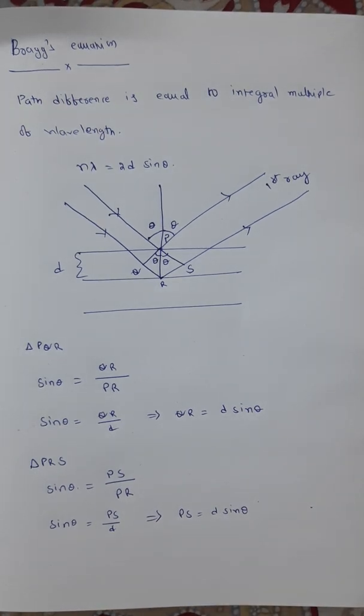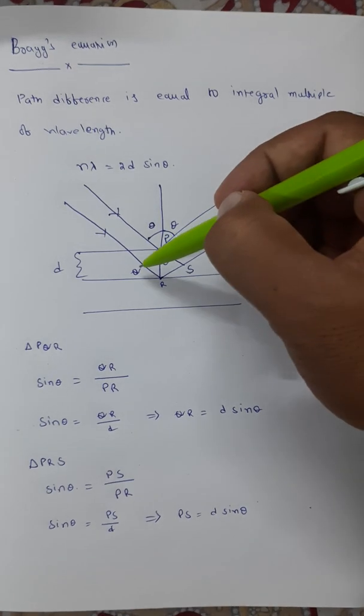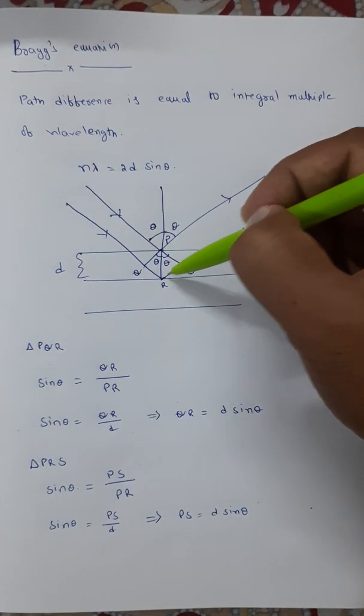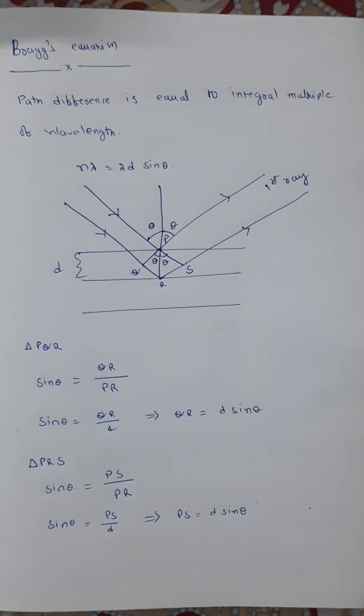When you observe the diagram carefully, the second ray has travelled an extra distance. This extra distance is nothing but QR plus RS, which is the path difference.